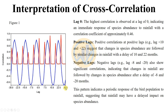For positive lags, significant correlations suggest that changes in species habitat are followed by similar changes in rainfall with a delay of 10 to 22 months. For negative lags, significant correlations indicate that changes in rainfall are followed by changes in species habitat after a delay of minus 8 and minus 20 months.